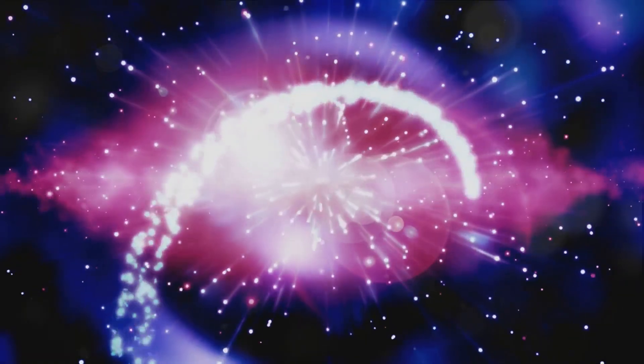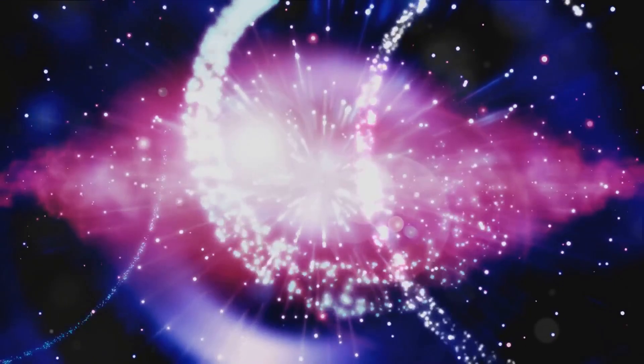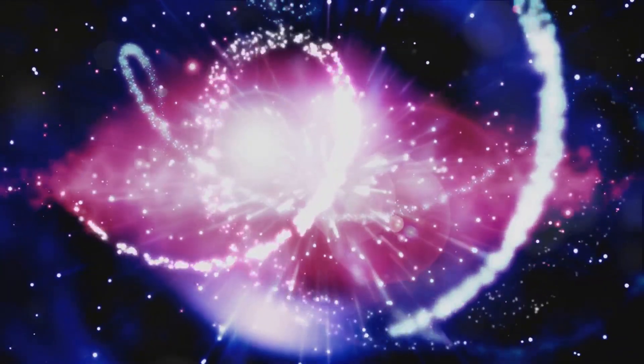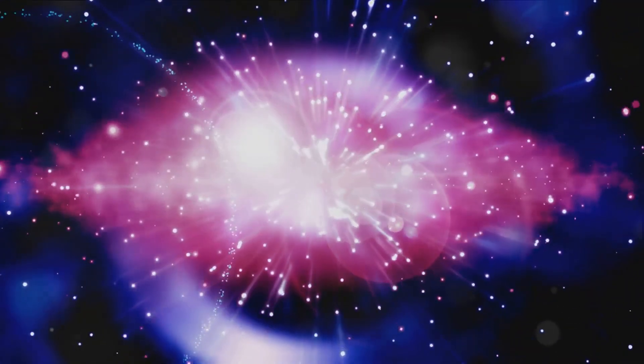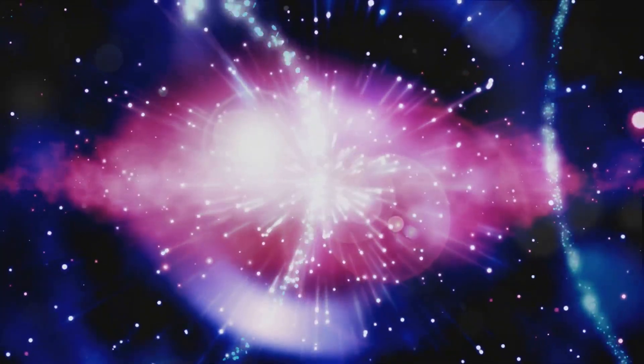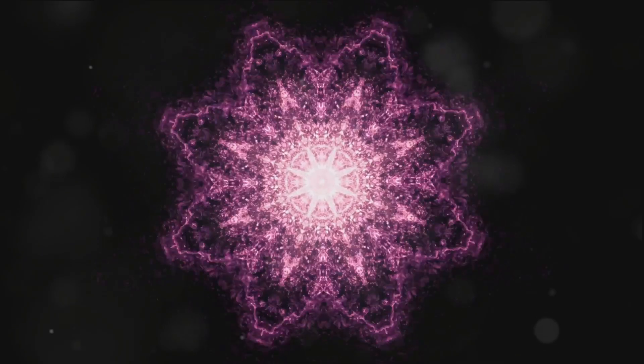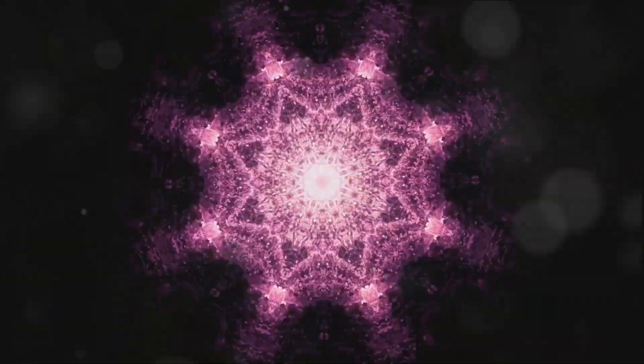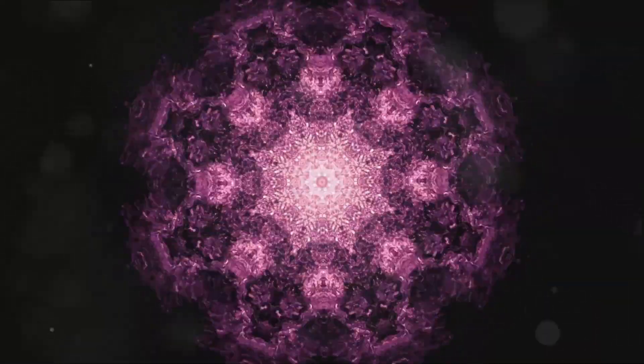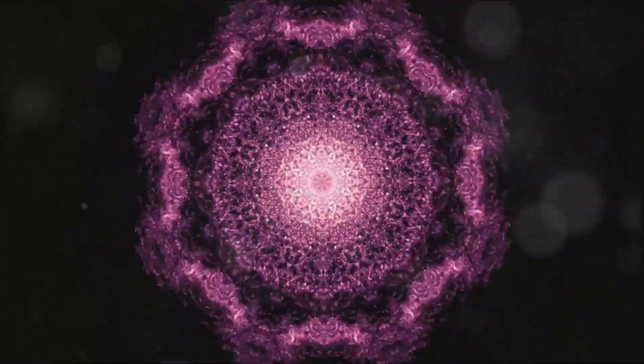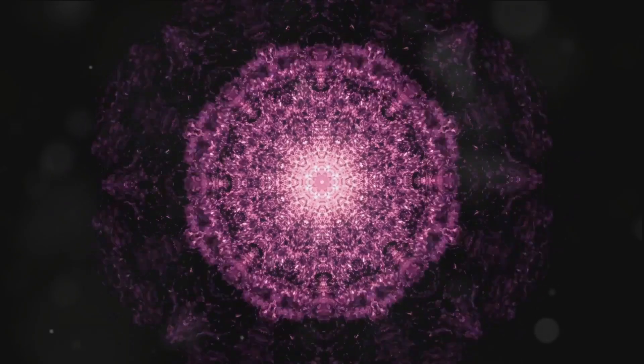Now envisage a cosmic tree standing tall and majestic in the heart of the universe. Each branch on this tree symbolizes a different choice you've made, each divergence a new path taken or not taken. Each leaf, a world teeming with possibilities, experiences, and outcomes, a different version of you living a different life. Picture a vast cosmic tree where each branch symbolizes a different choice and each leaf, a different world.